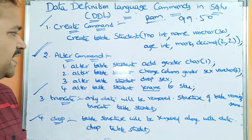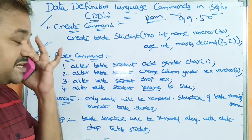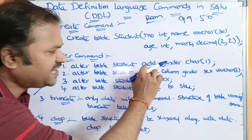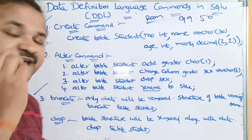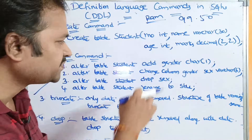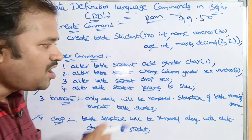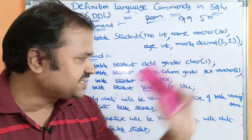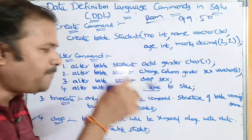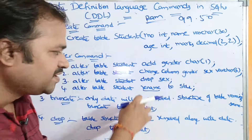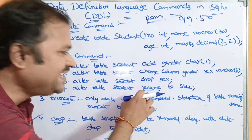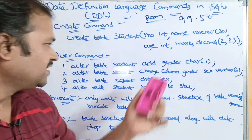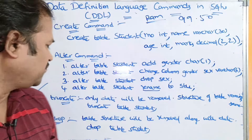The second command is the ALTER command. The major advantages of the ALTER command are: we can add a new column to an existing table, we can change an already existing column name as well as its data type, we can drop an already existing column, and we can rename the table as well. Let us see those four advantages.